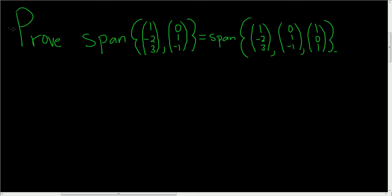In this video, we're going to prove that these two spans are equal. So what is a span? The span on the left-hand side is the set of all linear combinations of these vectors, and the span on the right is the set of all linear combinations of these vectors. We have to prove that these sets are actually equal, so we're going to use the method of double inclusion — we'll show that they're both subsets of each other, giving a direct proof.